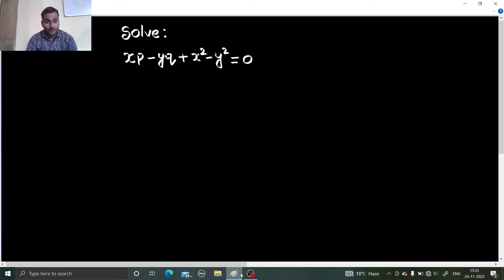If you look at this problem carefully, then let us make some adjustment first. The adjustment we are going to do is, this x square minus y square, send that term to the right hand side. So we will get xp minus yq equals to y square minus x square.